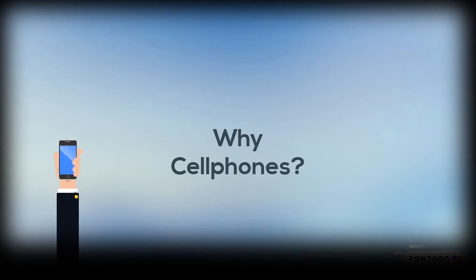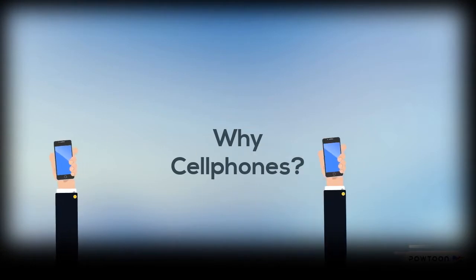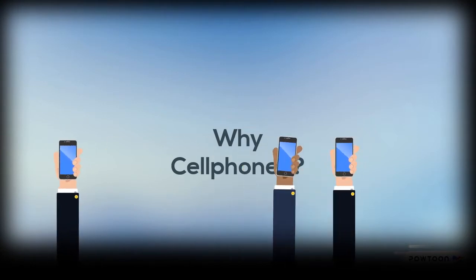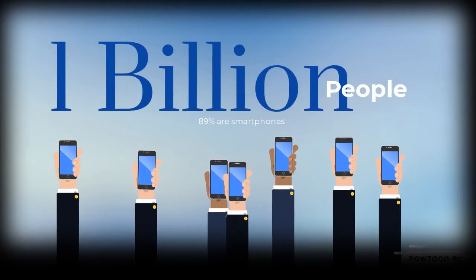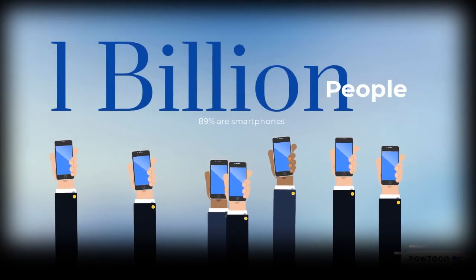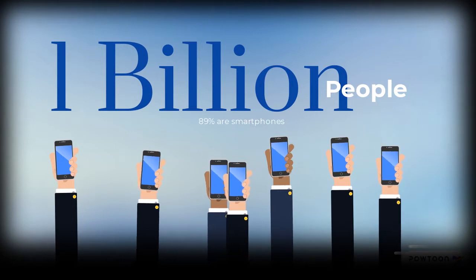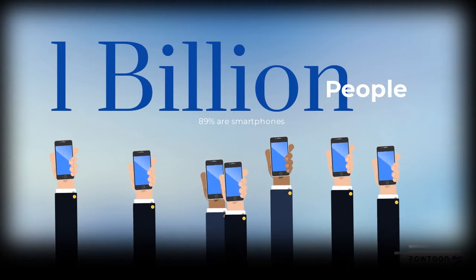Over 1 billion people use cell phones, and 89% of those are smartphones, which are phones that have the capability to download and install apps. Apps are little pieces of software that contain programming that store data on users' phones or on the cloud — the cloud being a housing of servers that relay and store information instead of on smartphones.